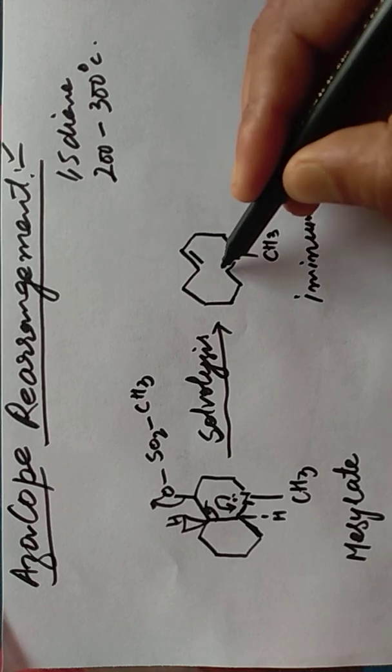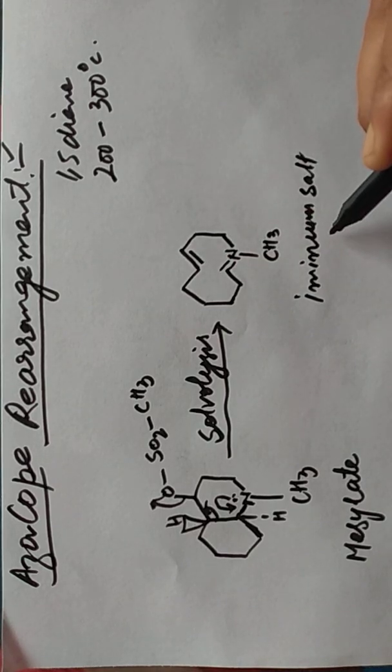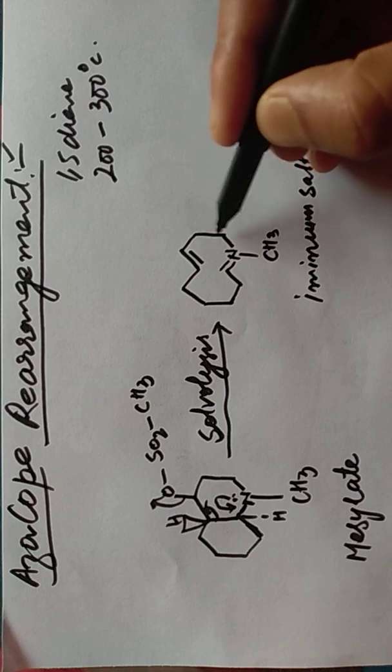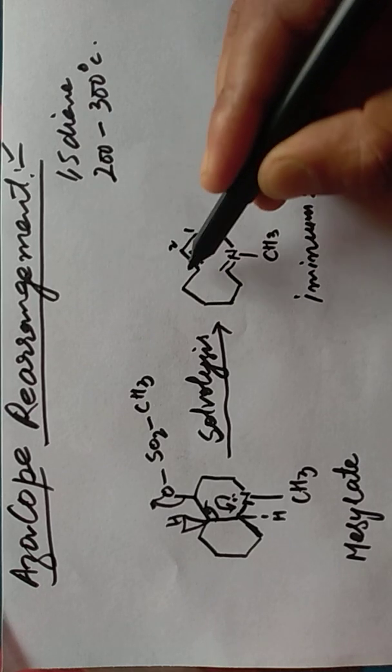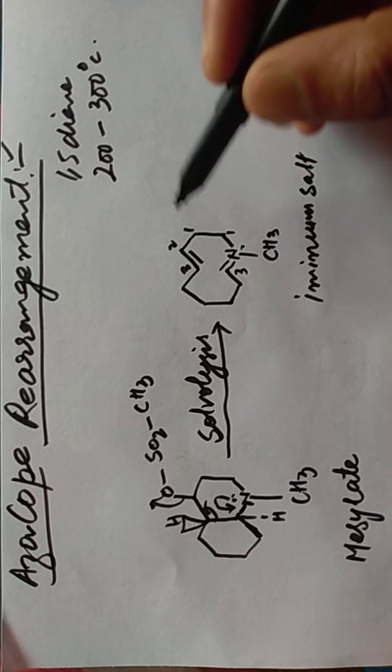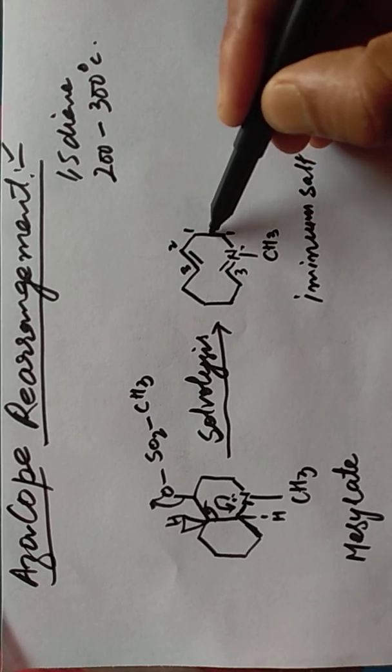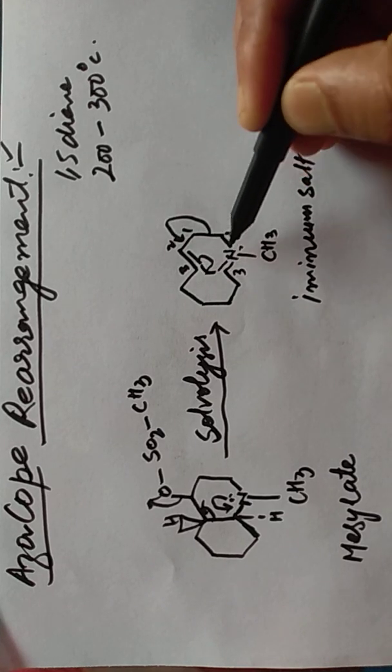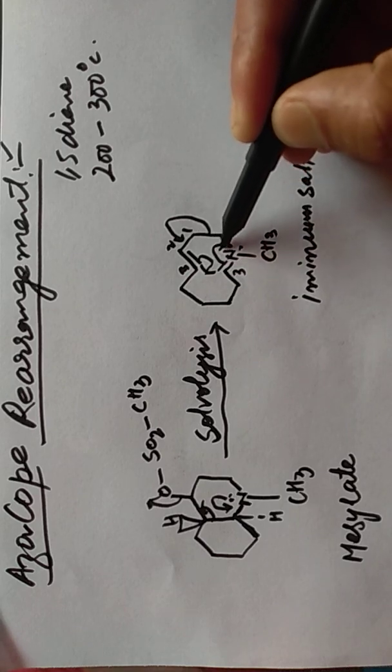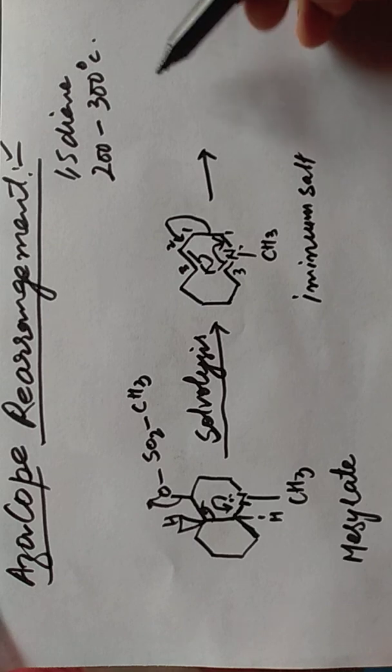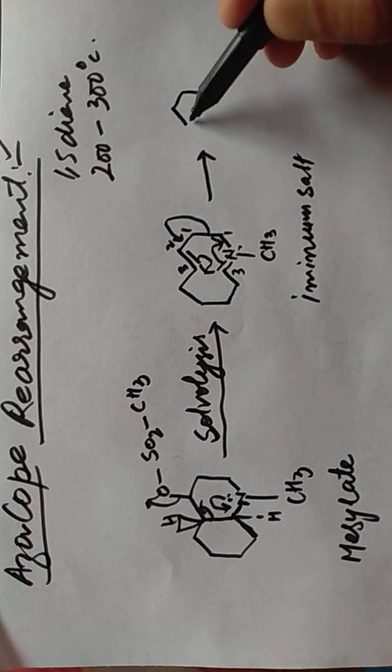this intermediate which is called as iminium salt, right? Now this is an allylic bond, right? So it breaks, this one shifts to this side, this one shifts to this side, and this one shifts to this side, and we get the final product like this.